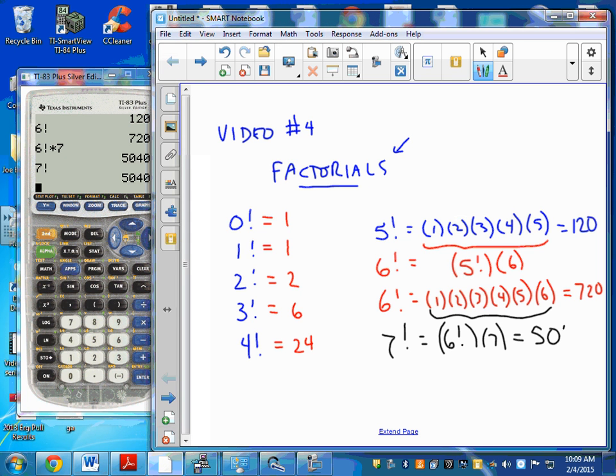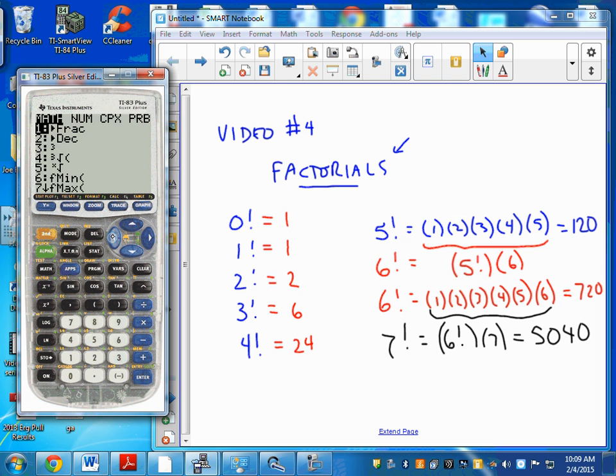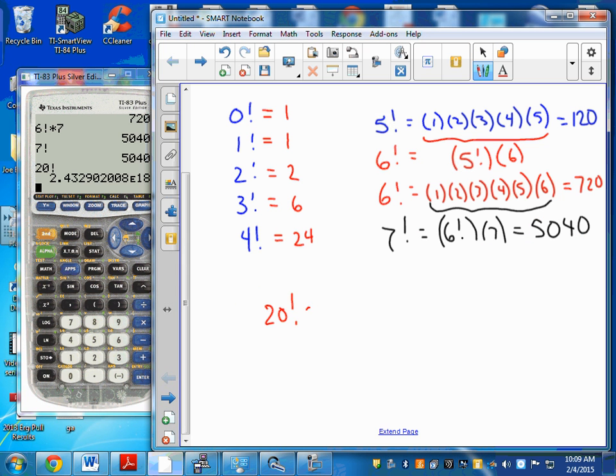If you wanted to enter 7! exactly, you could do that: second, math, probability, 7!, 5040. Okay, so these factorials grow very, very quickly. 5040 is probably one of the fastest growing functions that you're going to encounter in high school. For example, if I wanted to find 20!—20!—this number is huge. I mean, look, 20! is only an approximate value.